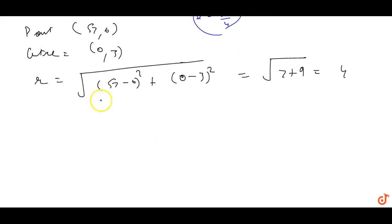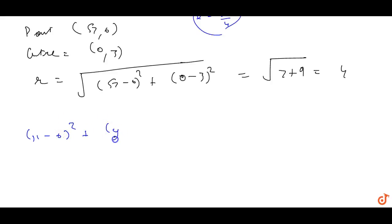We know the center of the circle. So the equation of the circle is: (x − 0)² + (y − 3)² = 16.